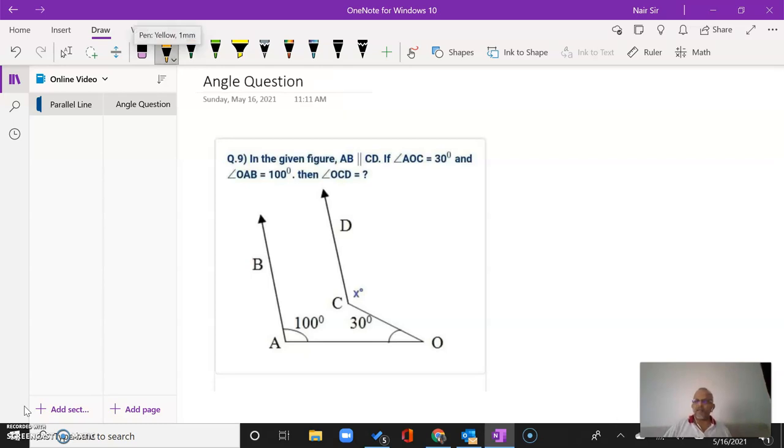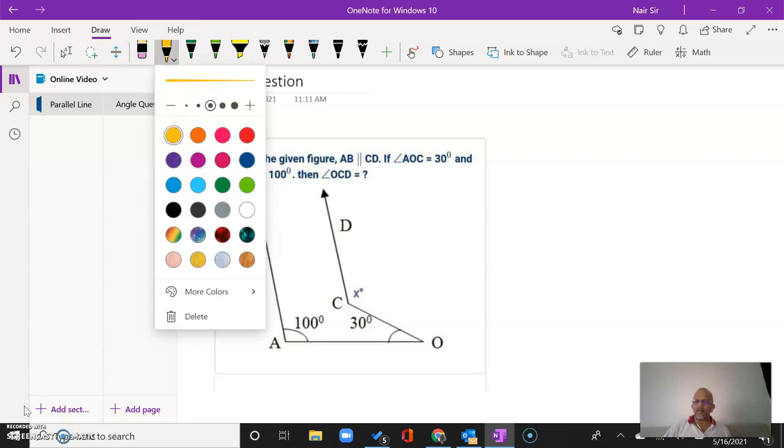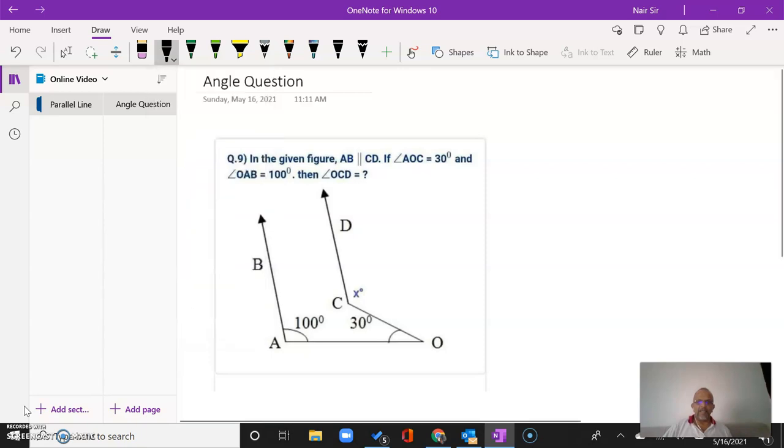One minute, let me just write it down. I've got AB parallel to CD. I've been given angle A is equal to 100 degrees. I have been given angle O is equal to 30 degrees.